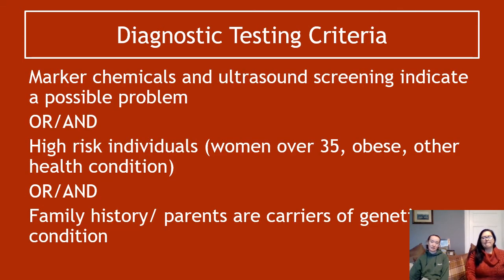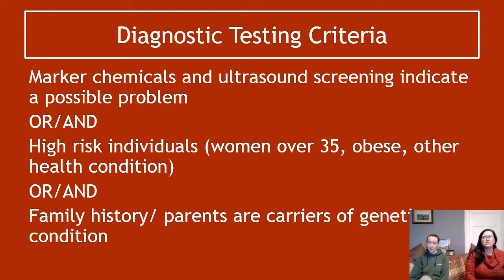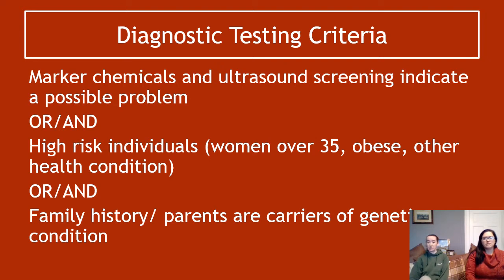In terms of the diagnostic testing criteria, if the ultrasounds or marker chemicals suggest there might be a problem, there are also other criteria. The main ones are if you're a high-risk person — women over the age of 35 are considered very high risk — or anyone who is obese or has any other health condition that might put them at more risk than other people.